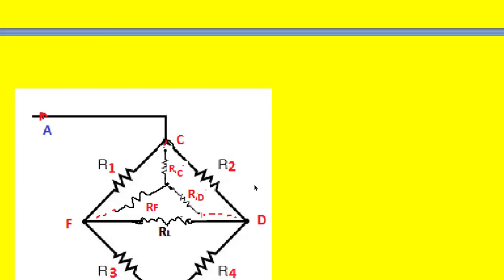We want the equivalent star for this upper delta of R1, R2, and Rl. The resistance between terminal C and the neutral is Rc, between D and neutral is Rd, and between F and neutral is Rf. Since this delta has all equal resistors equal to capital R, we perform a delta-to-star conversion by dividing by 3. This gives Rc = Rd = Rf = R/3.